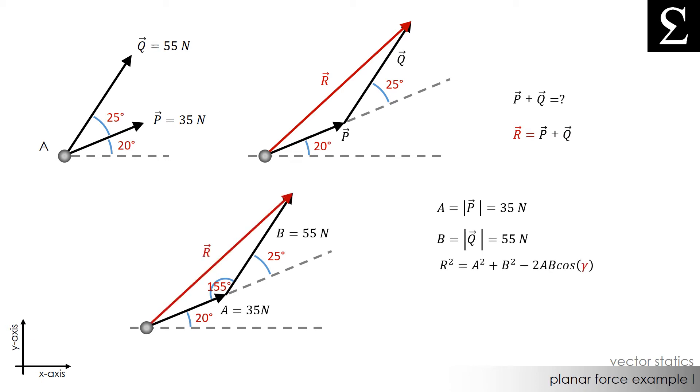We can use the law of cosines to figure out what the magnitude of R will be. R will be the unknown we are solving for. A would be the value of 35, B would be the value of 55, and the angle gamma would be the angle opposite to the side R, which in this case is 155 degrees. When we plug this into the law of cosines, we find that the magnitude of vector R is 87.97 newtons.